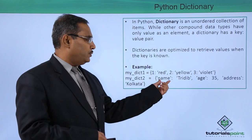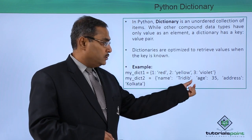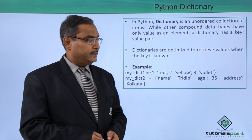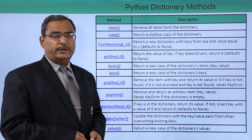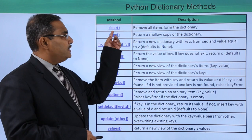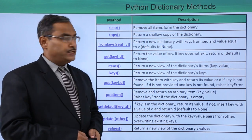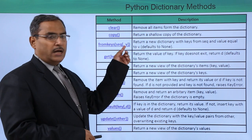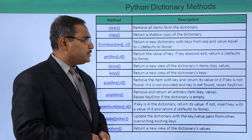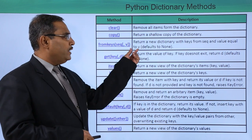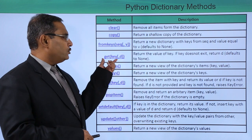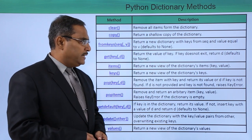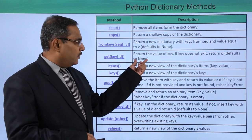Here we have my_dict two with name 'Tridit', age 35, and address 'Kolkata'. The different methods you can carry out on a dictionary include: clear, which removes all items; copy, which returns a shallow copy; and fromkeys, which takes a sequence and a value v, returning a new dictionary with keys from the sequence and values equal to v, defaulting to None. There is also get(key, d) which returns the value of a key, or d if the key does not exist, defaulting to None.